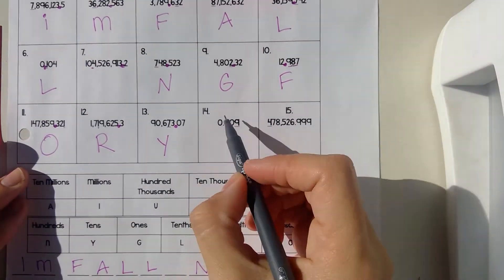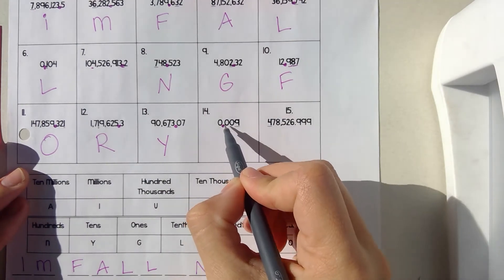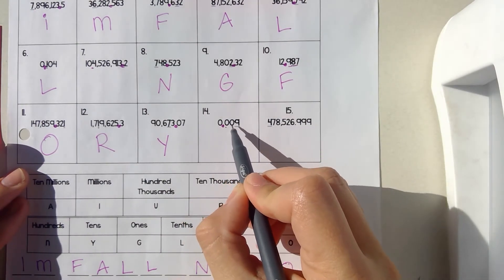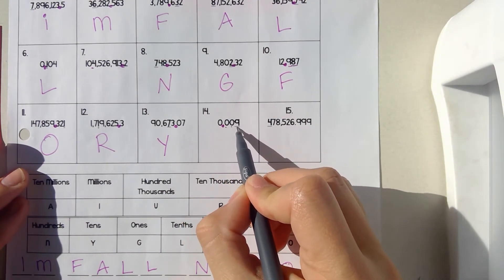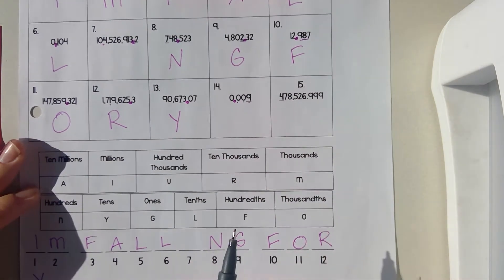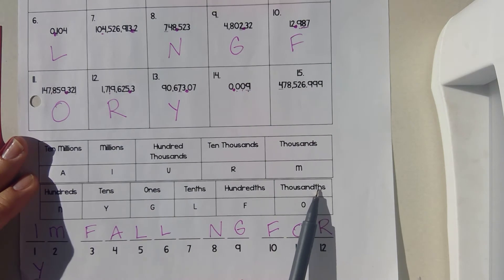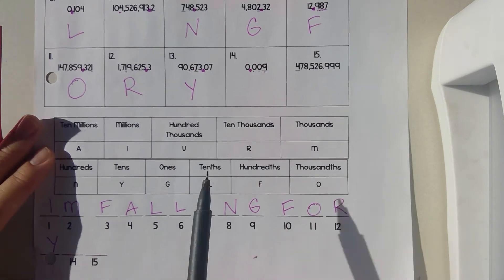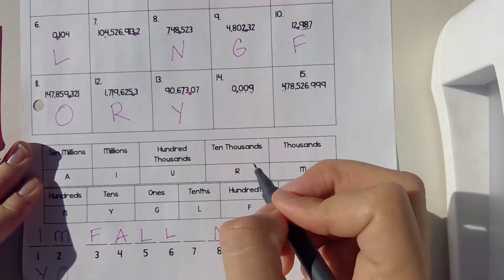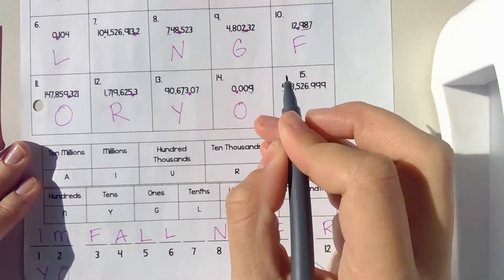Number fourteen — this is a decimal. And that would be tenths, hundredths, thousandths. Again, thousandths with a TH. So that's an O. Number fourteen is O.